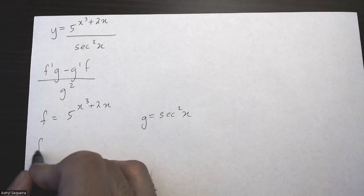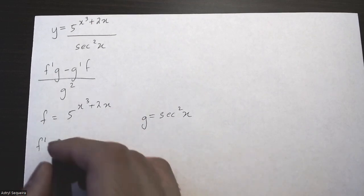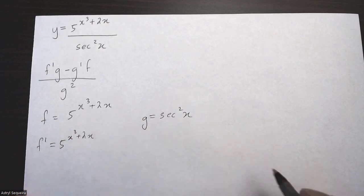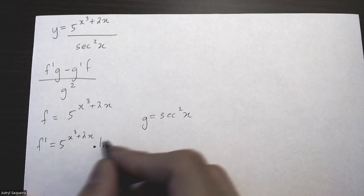Then f prime is just the derivation of f. When deriving an exponential function, you want to start by writing the exact same thing, then multiply by ln of the base, which is 5.